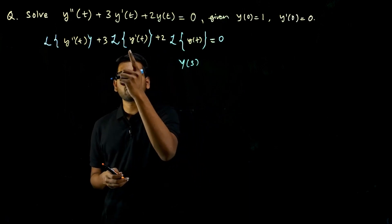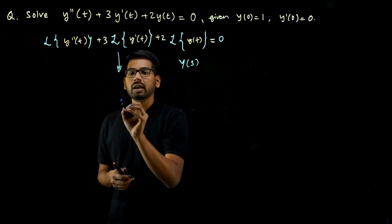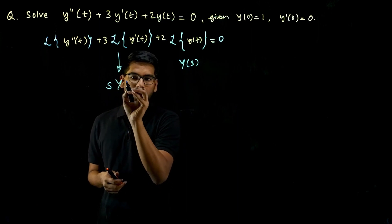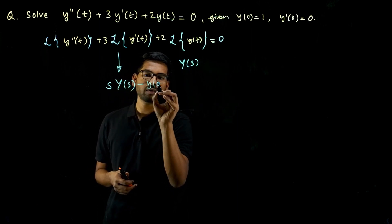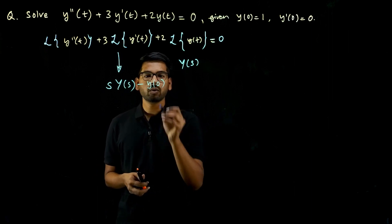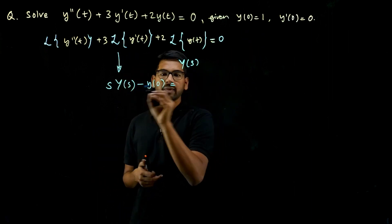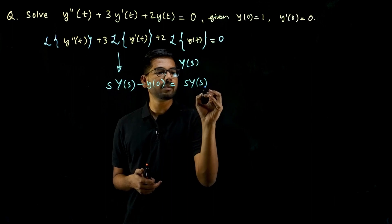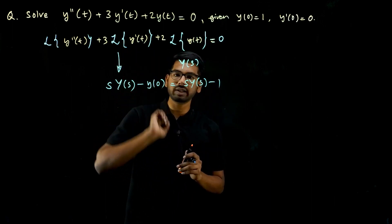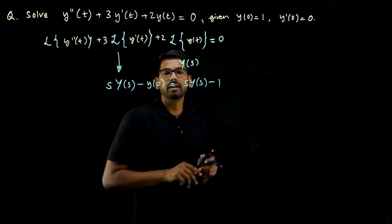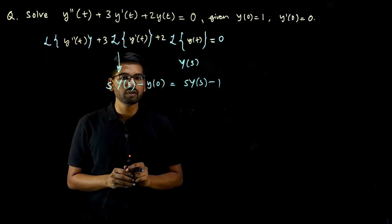What is Laplace transform of Y dash of t? It is S·Y(s) minus Y(0). We know Y(0) is one, so this becomes S·Y(s) minus one. So Laplace transform of Y dash of t is S·Y(s) minus one in this case, and generally it is minus Y(0).